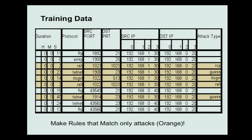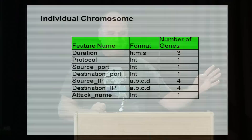Here's an example of the training data — the audit data. If you look at this, you can see these are attacks. The ones in orange are attack type, and then we have these attributes. This is a list of the attributes, and this is what covers the chromosome. These are the rules that we automatically generate. In the set of rules we have, we only want them to identify attacks.